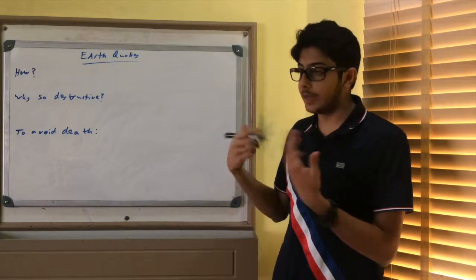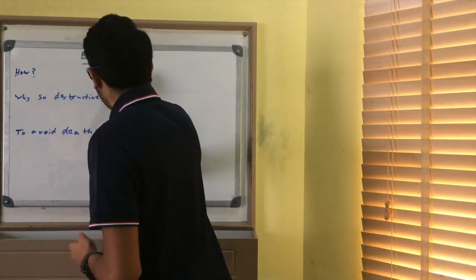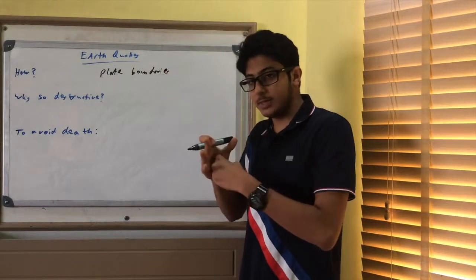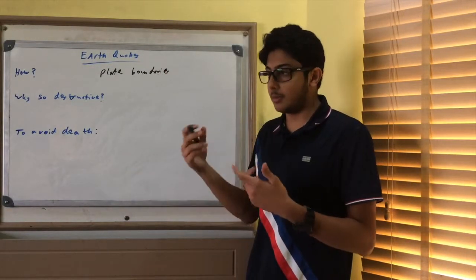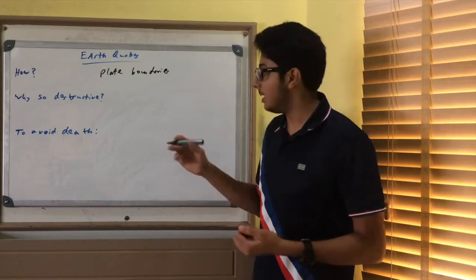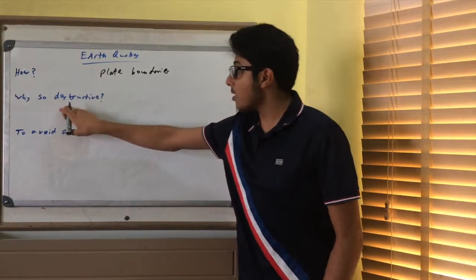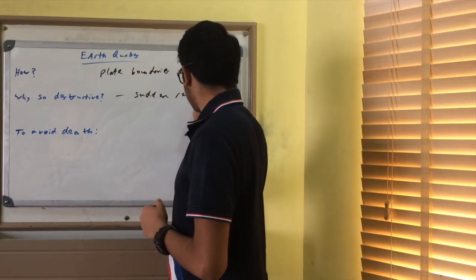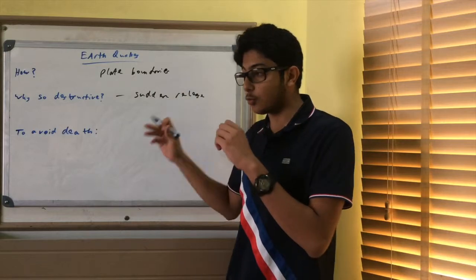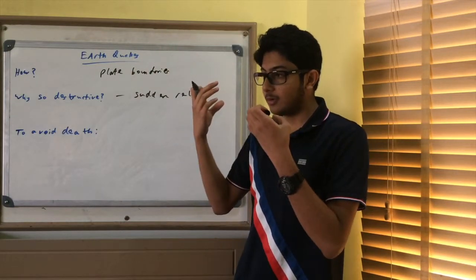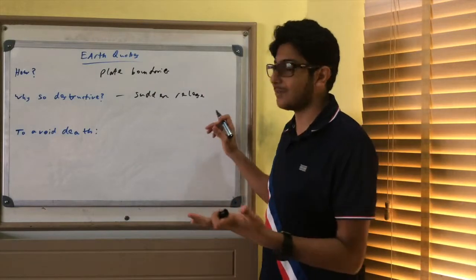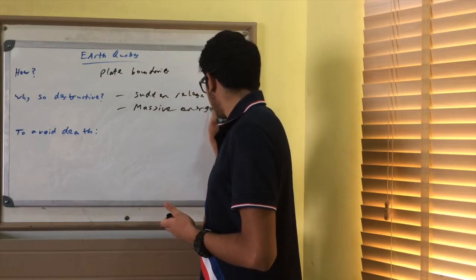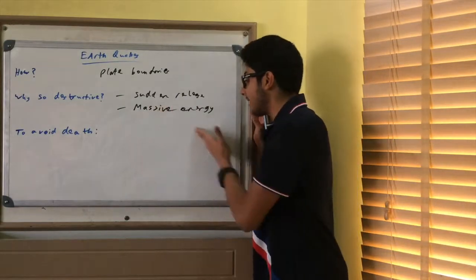Next. Okay. So, earthquakes. How do they happen? Well, the key words are plate boundaries. The tectonic plates, they collide at the boundaries. And this causes a constructive or destructive plate boundary. But that's geography, so you don't need to do that for your exam. Just plate boundaries, the plates collide. Why are earthquakes so destructive? Well, because it's a sudden release. They're so sudden. It's not gradually, gradually, gradually, gradually, gradually getting more earthquake-y. And also, massive energy. It's a sudden release, immediate, and it's massive energy.